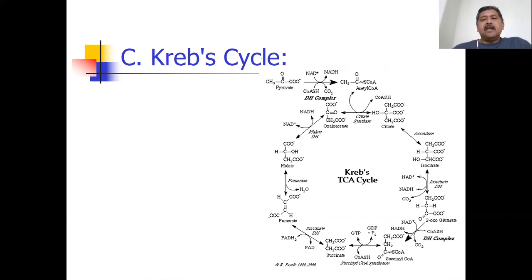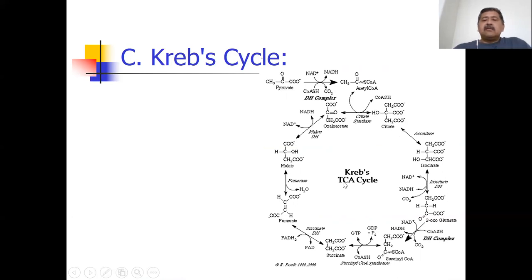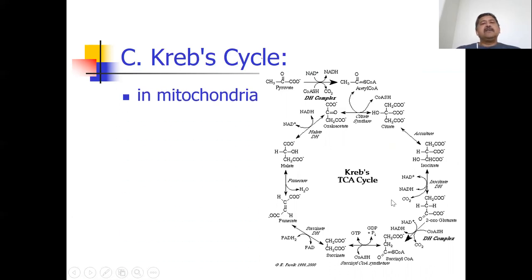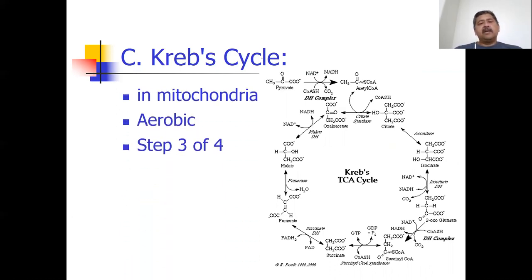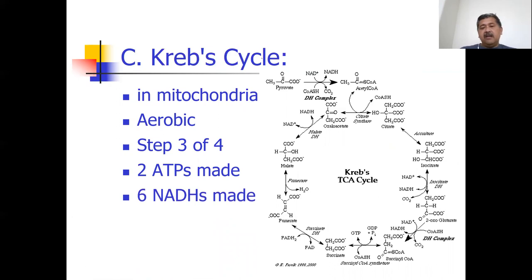Here's the Krebs cycle, named after Dr. Krebs. I'll also call it the citric acid cycle because the first chemical in the reaction cycle is citrate or citric acid. It's also called the TCA cycle because the chemicals are tricarboxylic acids. This happens in the mitochondria, it's aerobic, and it's the third step. Only two ATPs are made directly, but six NADHs are made, which will result in many ATPs.